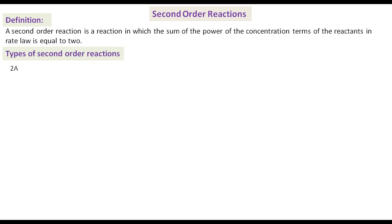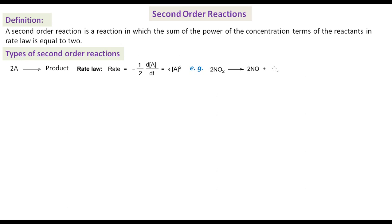There are two types of second order reaction. In type 1, two molecules of the same species react to form product. The rate law for this type of reaction is expressed as: rate = -1/2 · dA/dt = K[A]². Decomposition of two molecules of NO₂ into NO and O₂ is an example of this type of second order reaction.